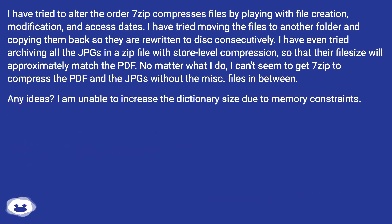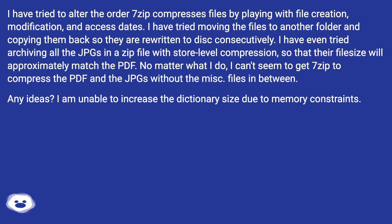I have tried to alter the order 7-zip compresses files by playing with file creation, modification, and access dates. I have tried moving the files to another folder and copying them back so they are rewritten to disk consecutively. I have even tried archiving all the JPGs in a zip file with store-level compression so that their file size will approximately match the PDF. No matter what I do, I can't seem to get 7-zip to compress the PDF and the JPGs without the miscellaneous files in between. Any ideas? I am unable to increase the dictionary size due to memory constraints.